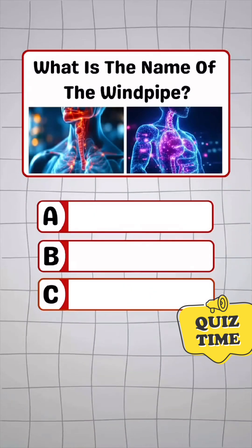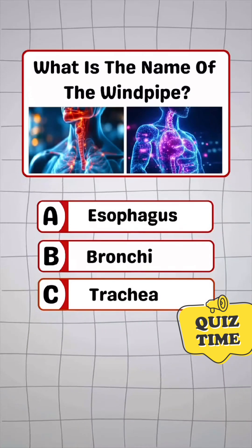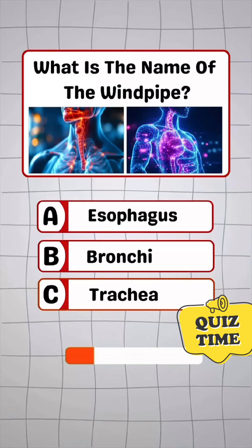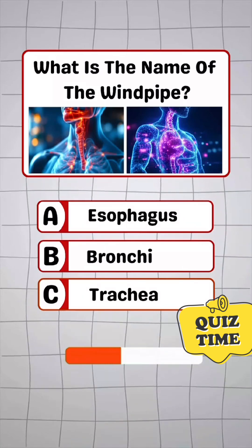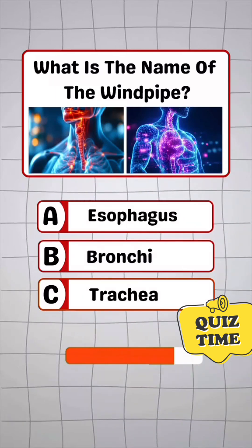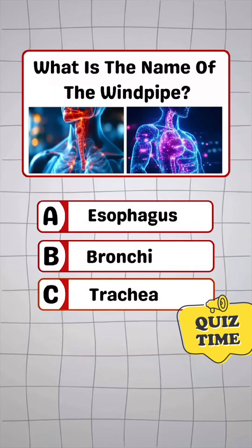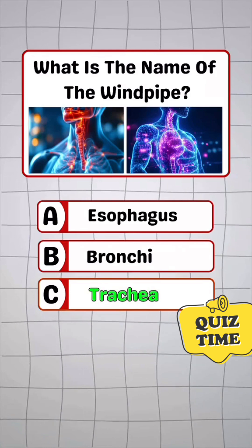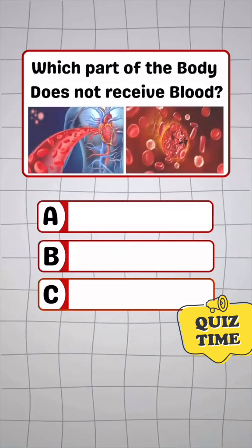Question 6. What is the name of the windpipe? Answer C: Trachea.